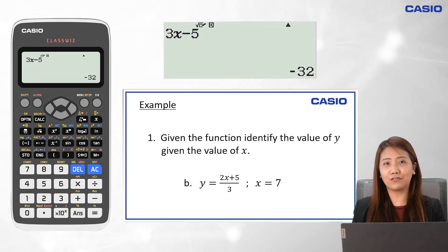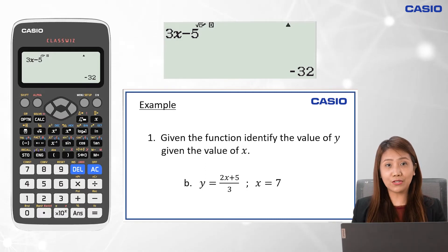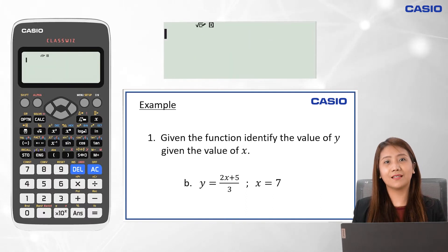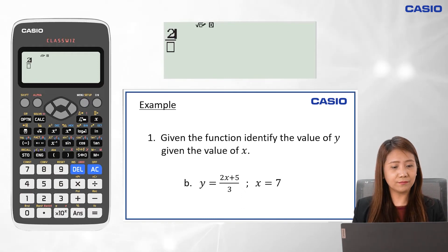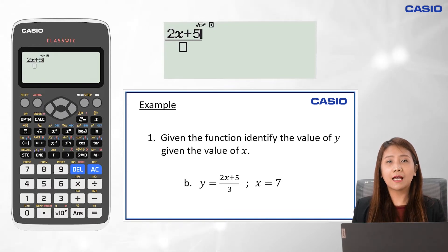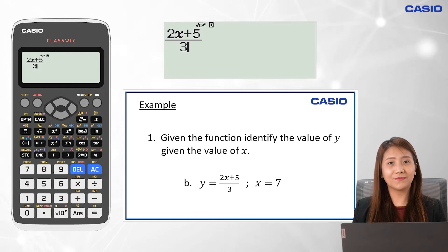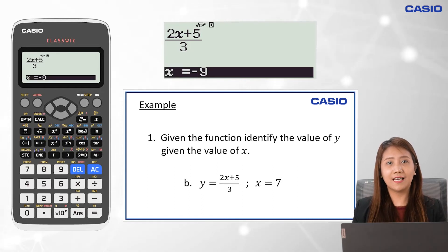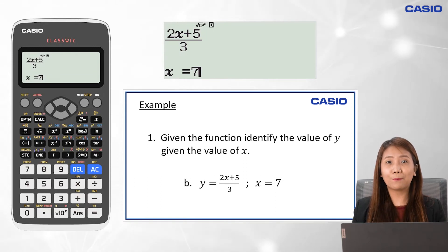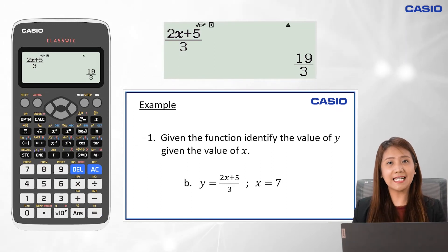Given the function, identify the value of y with a given value of x. The function is y equals the quantity 2x plus 5 over 3, where x is equal to 7. To solve for y, we go to Menu 1, calculate mode. Input the fraction key, key in the numerator which is 2x plus 5, press arrow down, then key in the denominator. Press calc, and it will ask for the value of x. Input 7, press equal sign twice, and the value of y is 19 over 3.